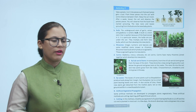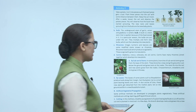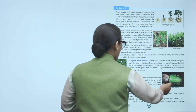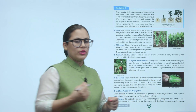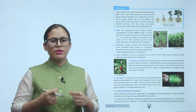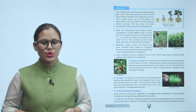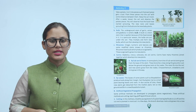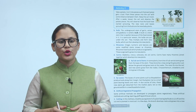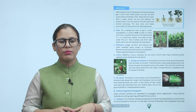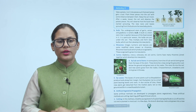By leaves — the leaves of some plants such as Bryophyllum produce buds along their margin. Each bud gives rise to a small plant bearing leaves and roots. In due course of time, these new plants get detached from the mother plant, fall on the ground, and form a new Bryophyllum plant.